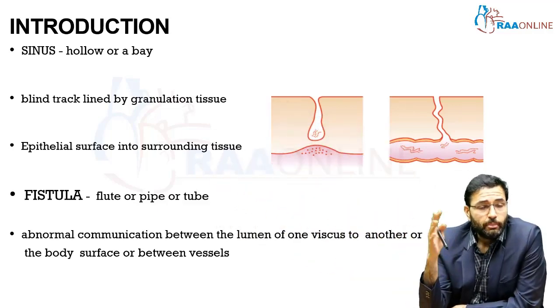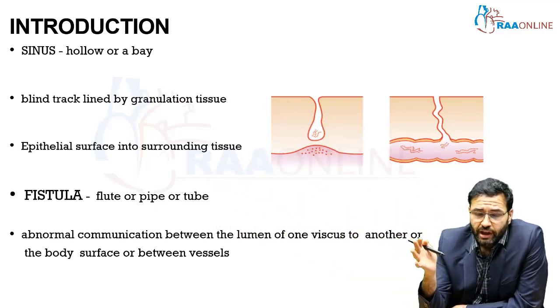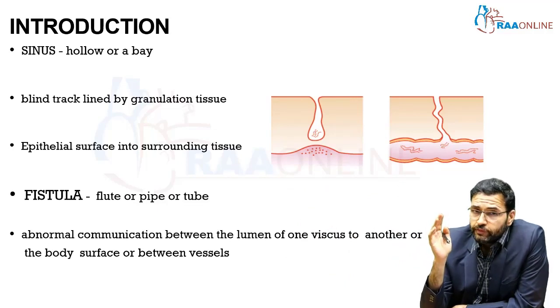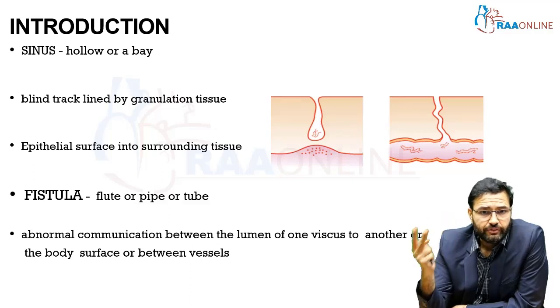To summarize: a sinus is a blind tract lined by granulation tissue, whereas a fistula is an abnormal communication between two epithelial surfaces.